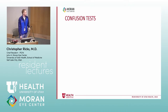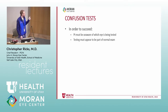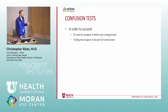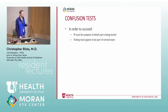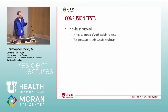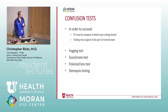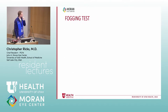There are also confusion tests. The key to confusion tests is that the patient must be unaware which eye is being tested and must feel it's part of the normal exam. If you tip them off that this is something unique to check if they're really seeing, these are easy to fake — even subconsciously. The tests include fogging, the duochrome test, the polarized lens test, and stereopsis testing.